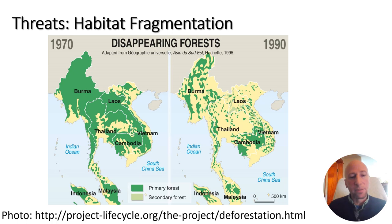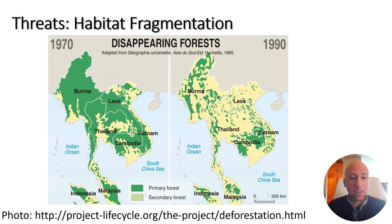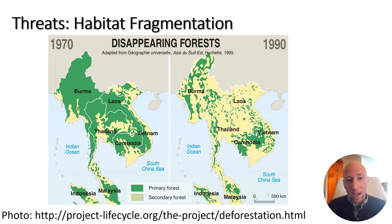When reviewing the threats to leopards across their range, the biggest one is habitat fragmentation. Looking at the example of forested habitat in Southeast Asia between 1970 and 1990, there was a pretty significant change. Leopards can exist outside of forested environments and even live in urban and suburban environments, but when there's such a fast change to habitat it can significantly impact those species that live there because they have to adapt to that changing environment, and that doesn't always happen quickly.